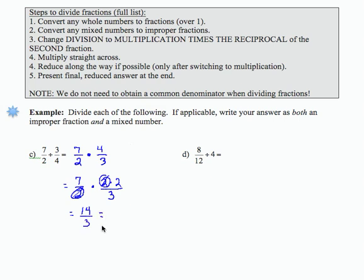3 will divide into 14 four times. 4 times 3 is 12. That leaves me a remainder of 2 over 3. So here I have my improper fraction and my mixed number result for the initial division.